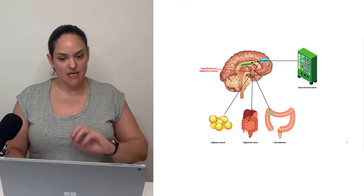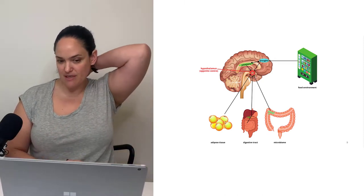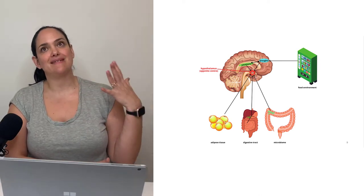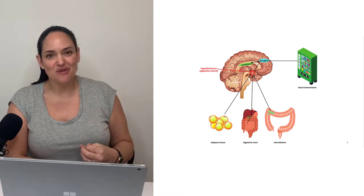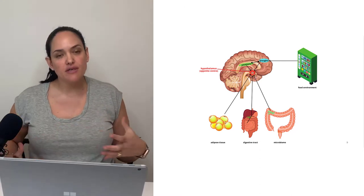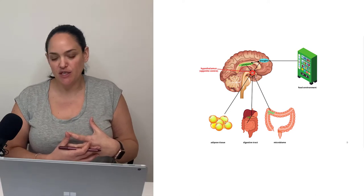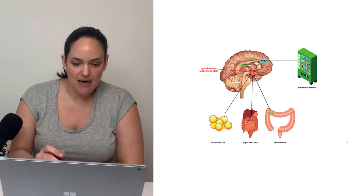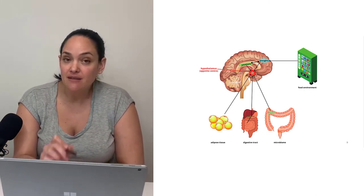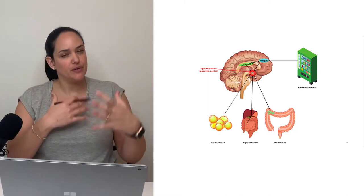In this unit, we are going to look at the hypothalamic regulation of appetite. The hypothalamus sits just anterior and inferior to the thalamus — this is our main drive center, our main site of homeostasis in the body. Like a lot of central control regions in the brain, it's receiving input from a lot of internal sources, and arguably external ones as well.